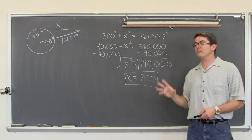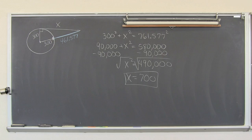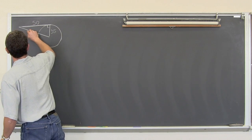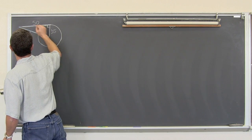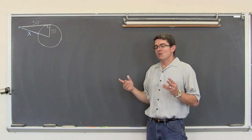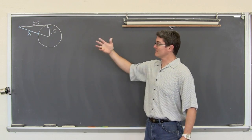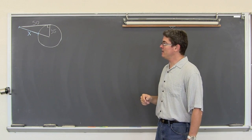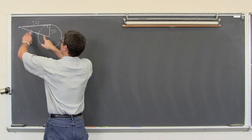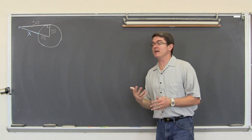We are going to use basically the same diagram, but I am going to move the x to another location along this hypotenuse and see how much that changes our work. Now with this example I have put x as just a portion of the hypotenuse. We do know two sides of the right triangle: the radius of 35 and the other leg of 50, the length of the tangent segment. The length of the hypotenuse is not x — it is actually x plus 35.